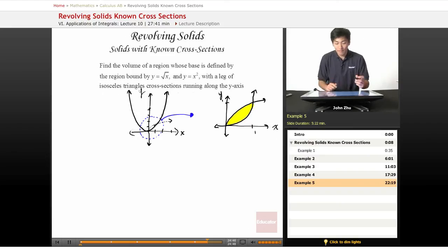We have a leg of the isosceles triangle running along the y-axis, so just one leg. So our triangle is going to look somewhat like this, with the right angle right there. And these are the sides, and they are equal. This is the shape with the infinitesimally small thickness. Here's our thickness.